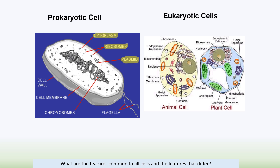The cytoplasm is where all chemical reactions occur. The cell wall is made out of peptidoglycan — not cellulose — and gives structure and strength. The cell membrane controls what enters and leaves. The chromosomes are the hereditary material: free-floating, naked DNA not containing histone proteins and not enclosed in a nucleus. Flagella help movement of the bacterial cell.